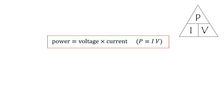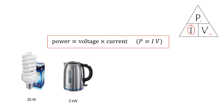I suggest you learn that, P I V like that in the triangle. You're going to have to probably rearrange the equation. You might have to work out the current, you might have to work out the voltage. So it's worth learning that triangle. If you want to work out the current, then the current is P over V. The voltage is the power divided by the current. The power is the current times the voltage. Learn that triangle.